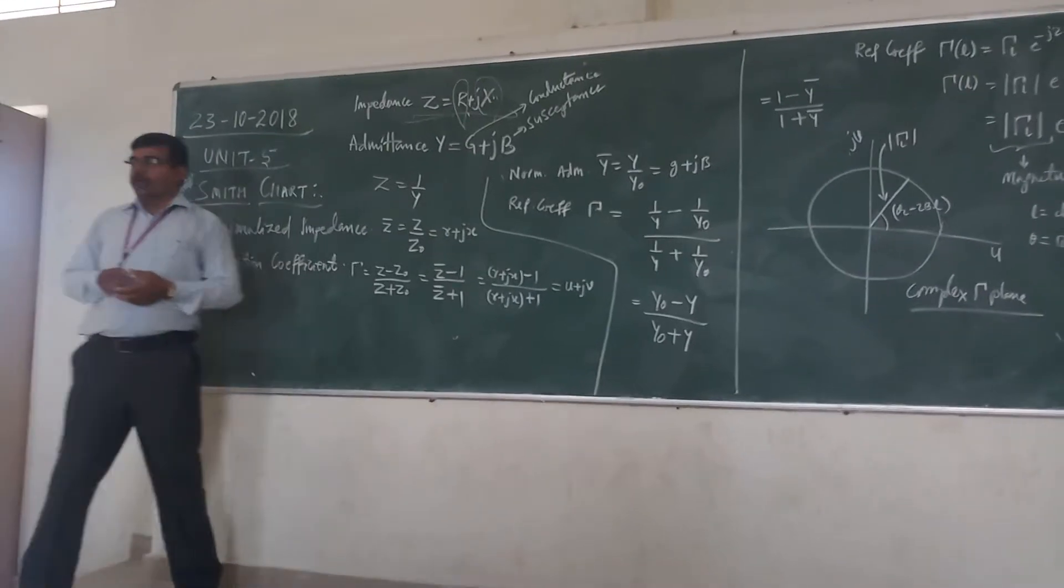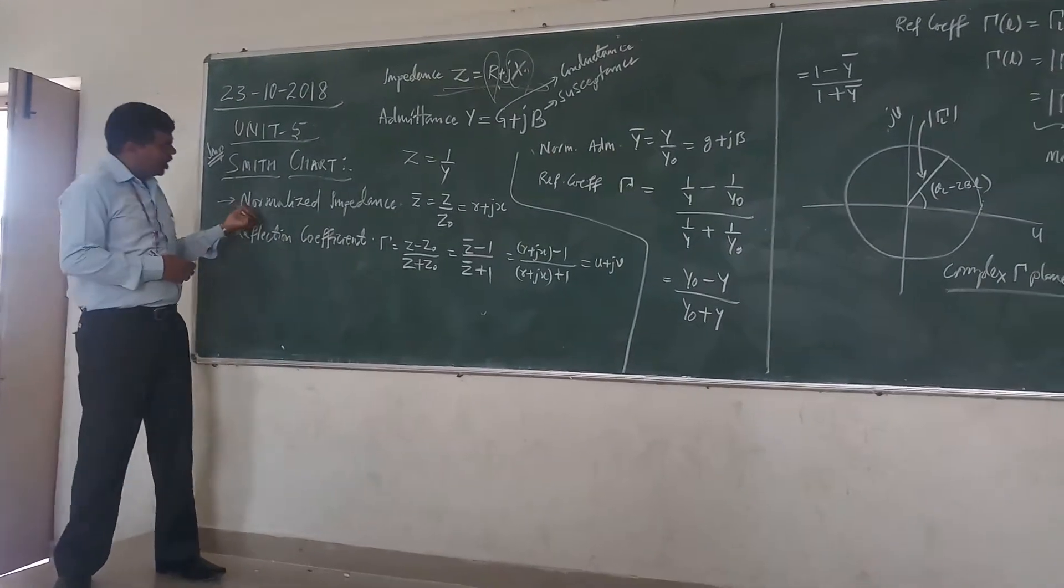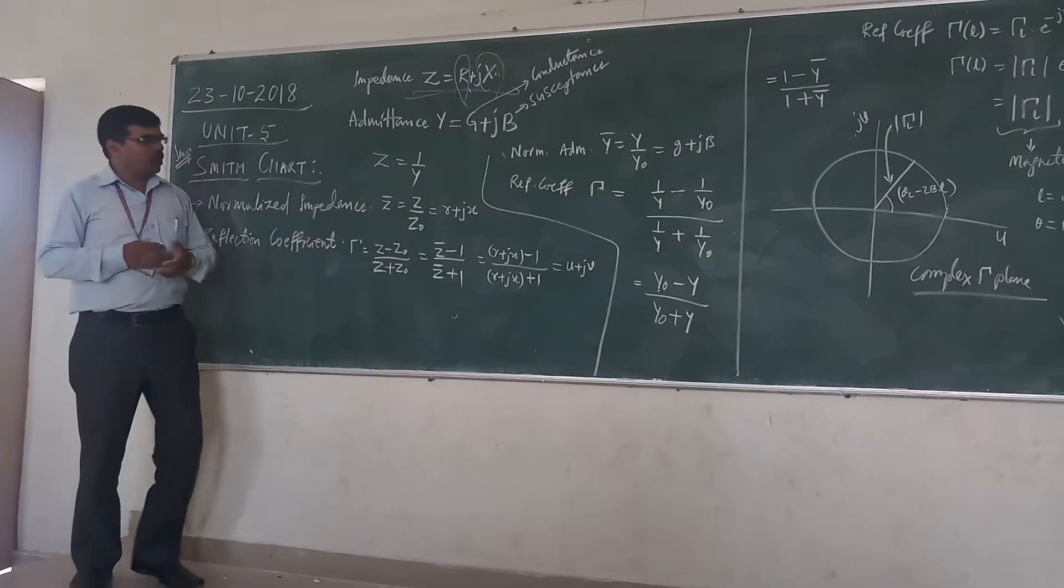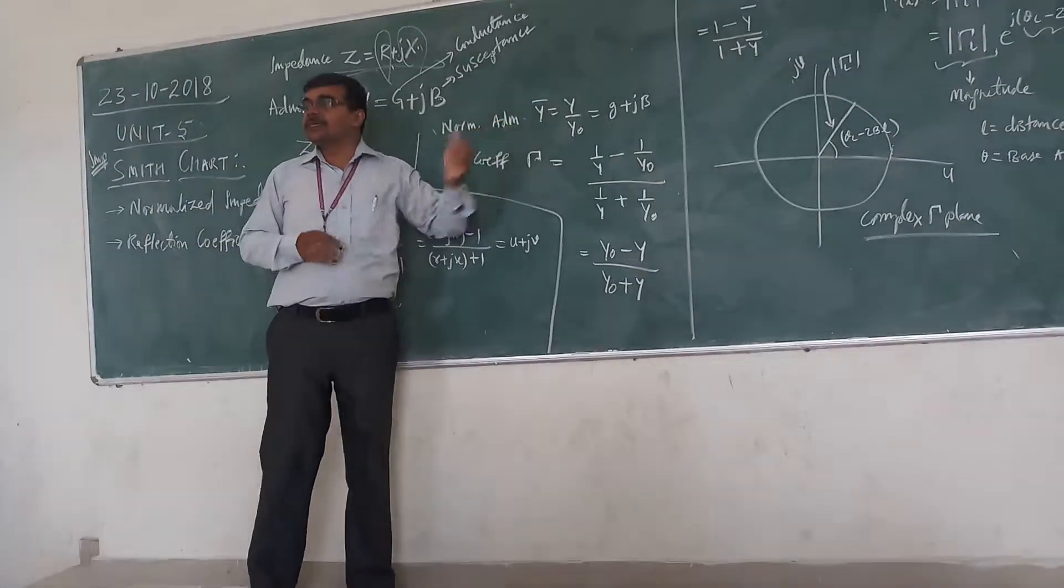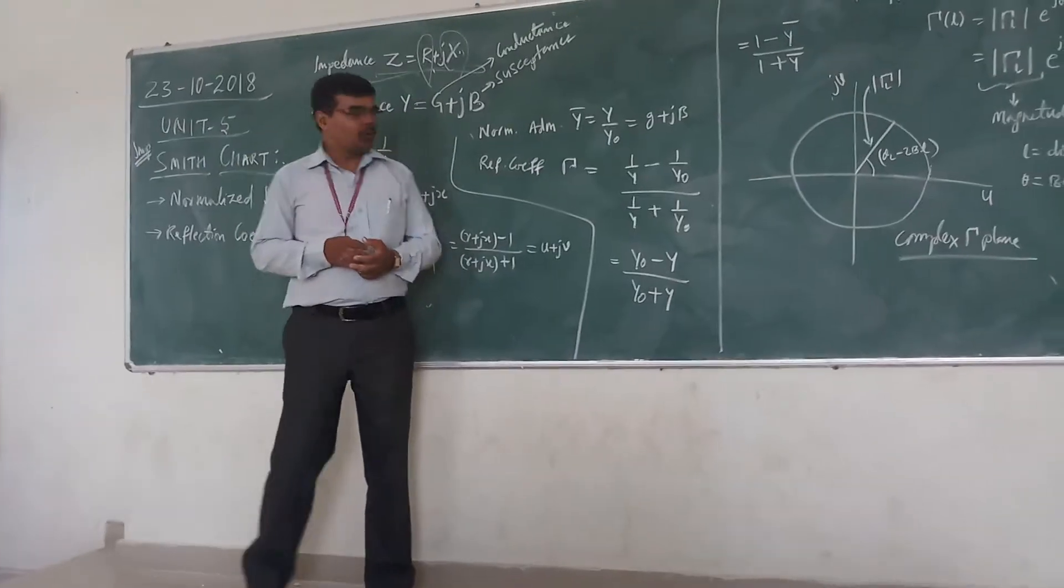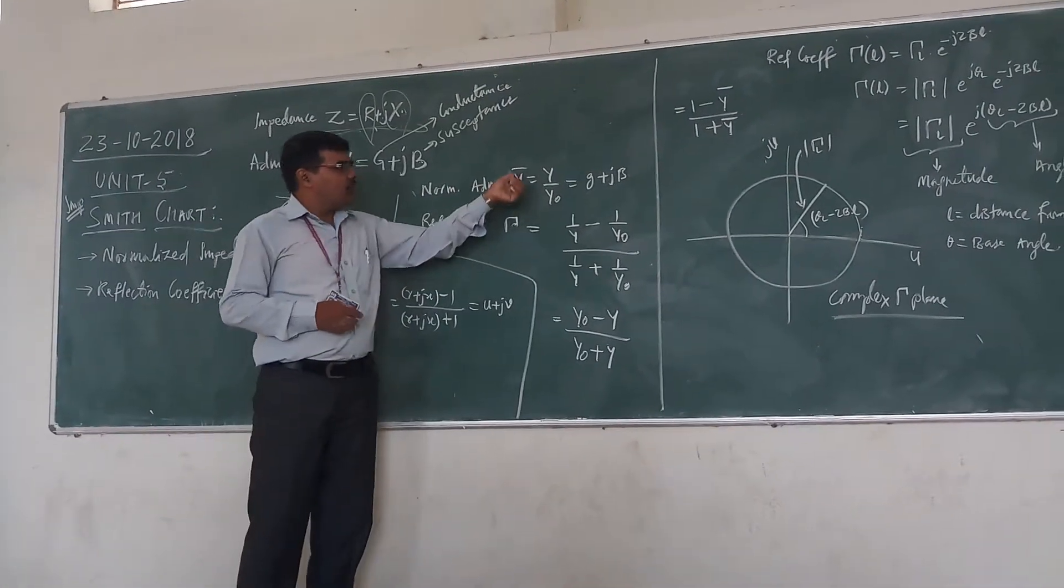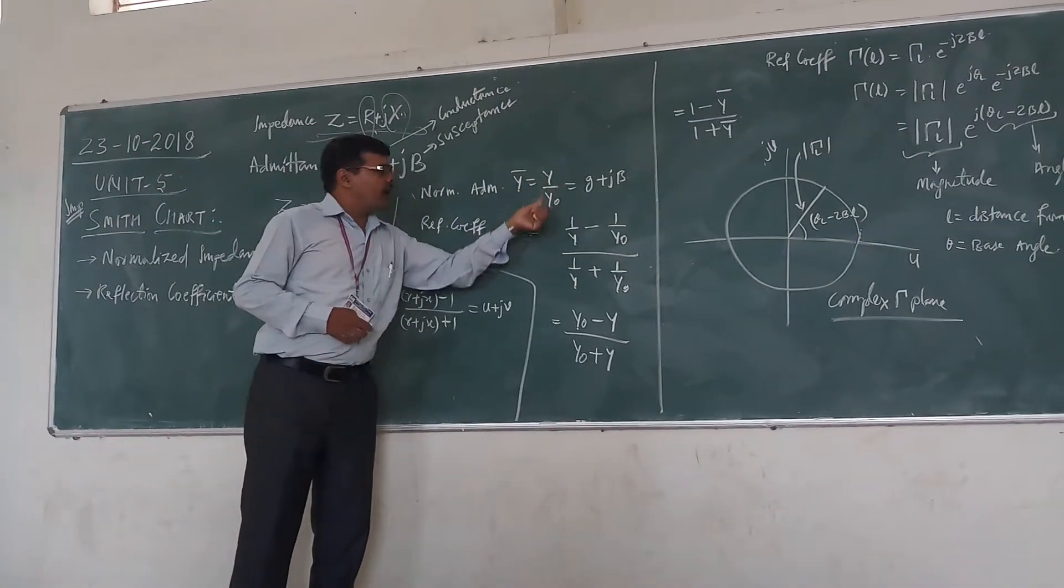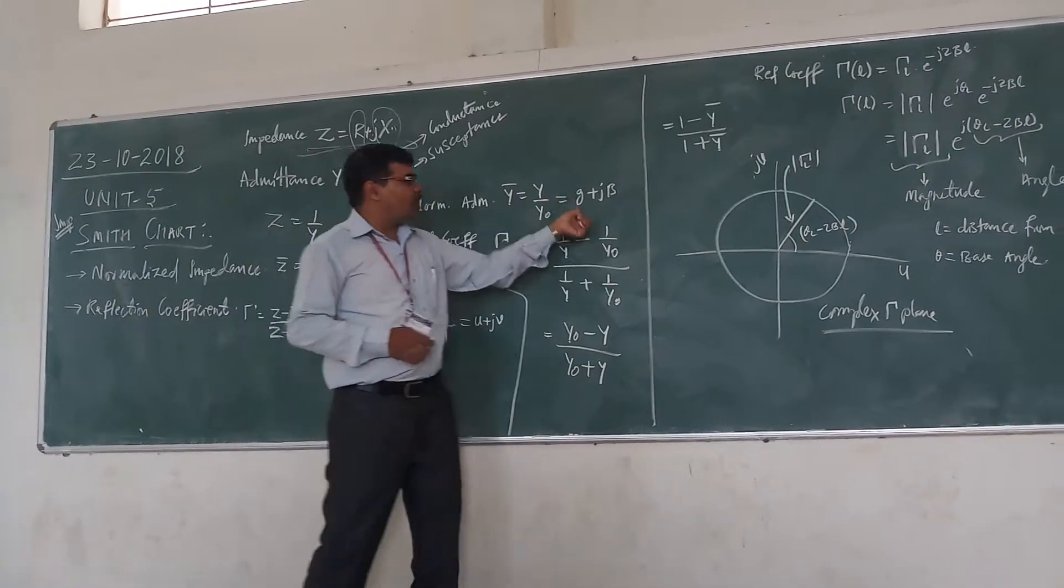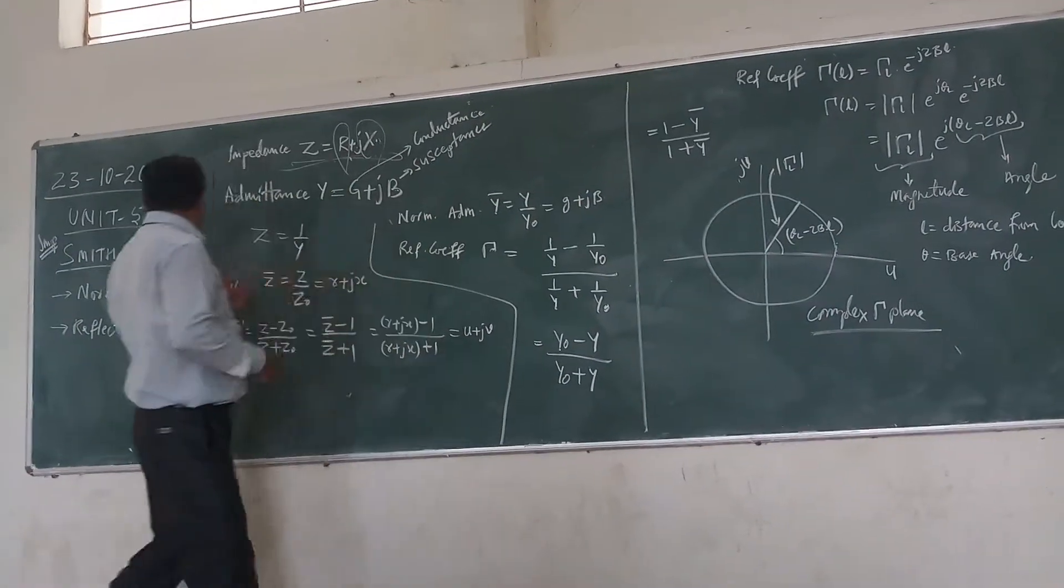What do we do? As we have seen normalized impedance, we need to find normalized admittance also. Your normalized admittance Y-bar will be Y by Y0. That is your small g plus jb. Similarly,